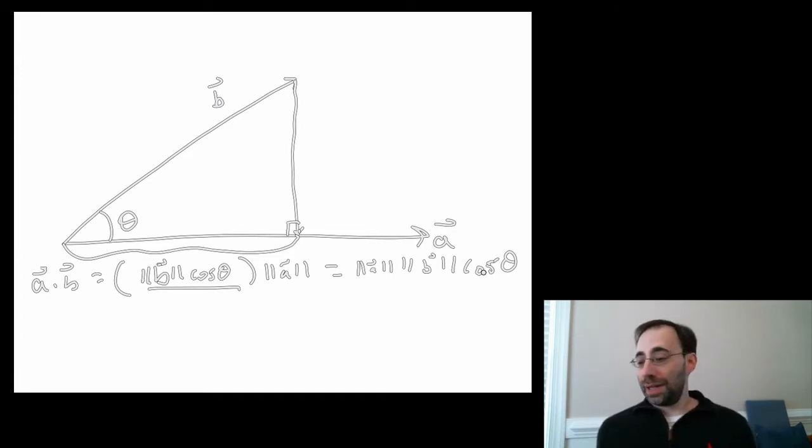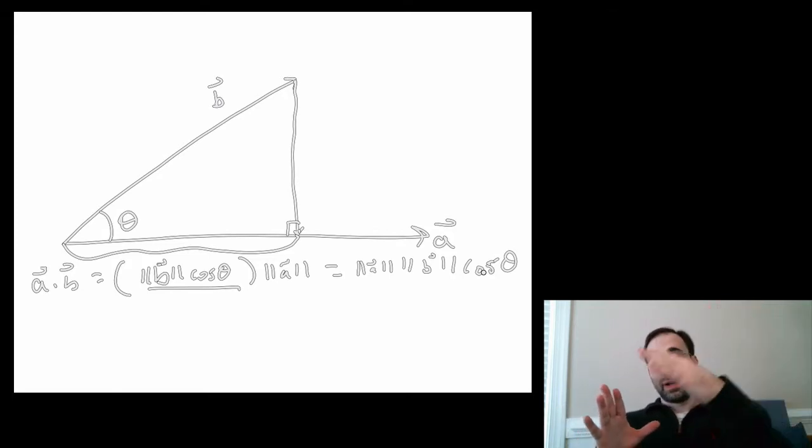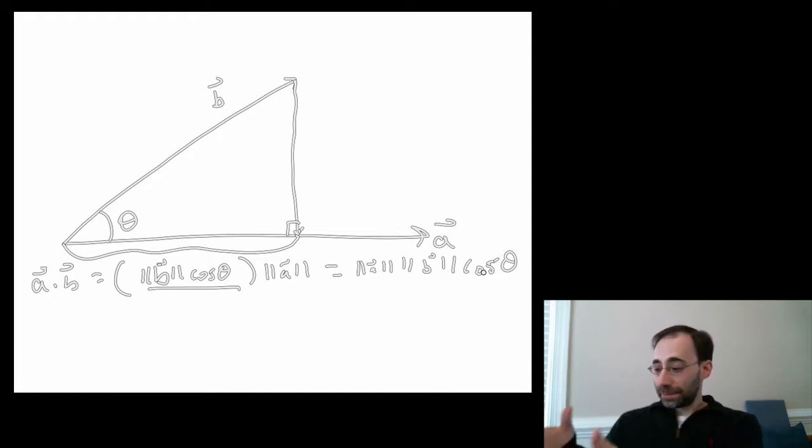In other words, a dot b is equal to the norms of a and b multiplied times cosine theta. That works in two dimensions, but the intuition holds more generally. In two dimensions, it's just a projection of the one vector onto the other one multiplied by that vector's length. That gives you the dot product of a and b.